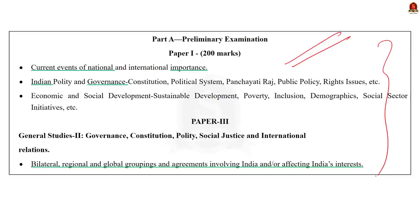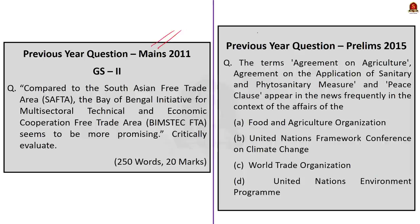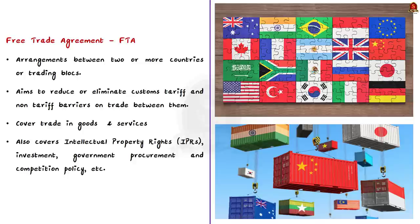Before getting into the discussion, look at these two questions — one is a previous year mains question from 2011 mains GS Paper 2, and the other is a preliminary question from 2015. Both are related to the free trade agreement we are going to discuss today. These questions show how important this discussion is for both mains and prelims examinations, so pay close attention.